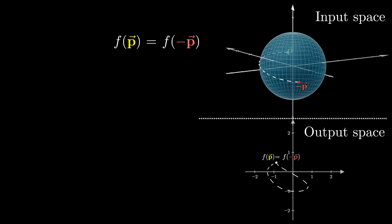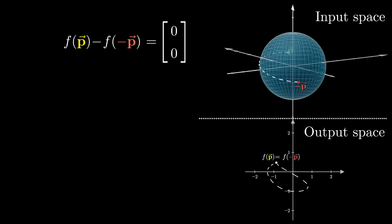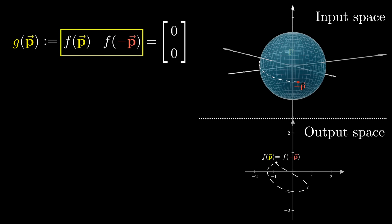The key idea here, which might seem small at first, is to rearrange this and say f of p minus f of negative p equals zero zero, and focus on a new function, g of p, that's defined to be this left-hand side here, f of p minus f of negative p.